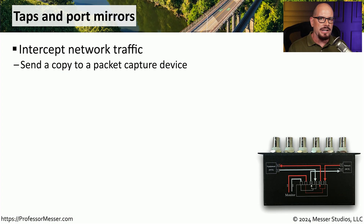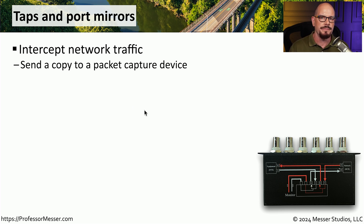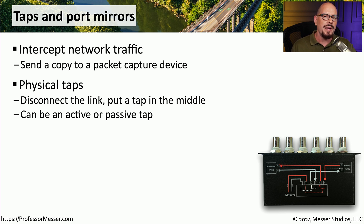If you'd like to capture data from the network itself, you may need to use some type of external tap. This allows you to intercept network traffic and send a copy of that traffic to a protocol analysis tool or packet capture device. For a physical tap, you would physically break the connection and put the tap in the middle, which may require some downtime to initially install. This could be a passive tap, which is not powered — you often see passive taps used for optical fiber — or it might be an active tap that requires additional power to regenerate the signal through the tap.